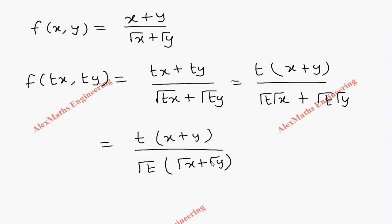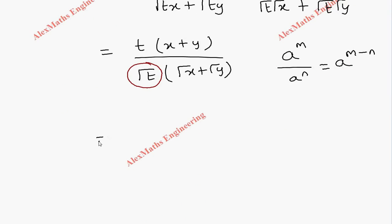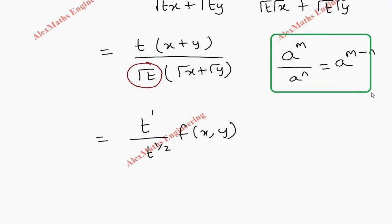We can take root(t) common in the denominator, with the remaining term being root(x) + root(y). Now this denominator term is t to the power half. Using the indices rule a^m divided by a^n = a^(m−n): the numerator is t^1 and the denominator is t^(1/2), so we subtract the powers to get t^(1 − 1/2).